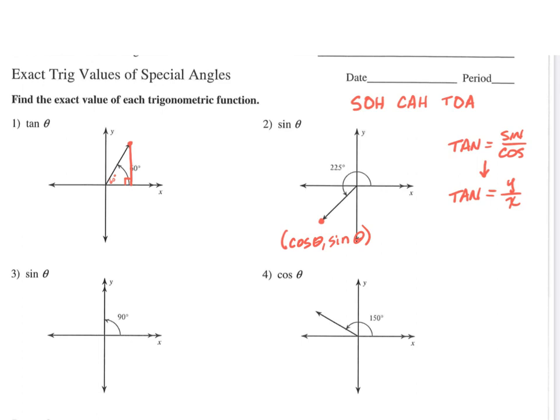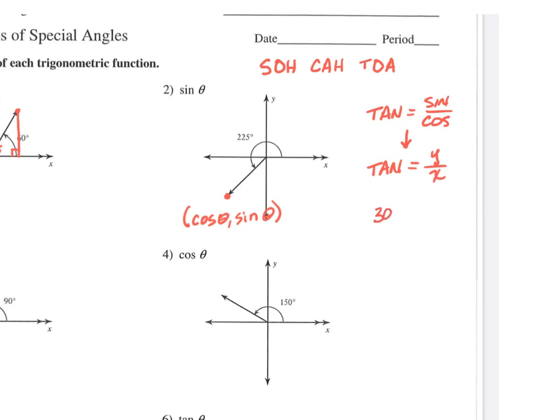So our special right triangles were the 30-60-90 right triangle. I'll put this over here. So like that, 60 degrees, 30 degrees. And then remember, the ratio for that triangle is the shortest side we call 1. The hypotenuse would be 2, and the middle side is root 3. That is the ratio of the sides of a 30-60-90.